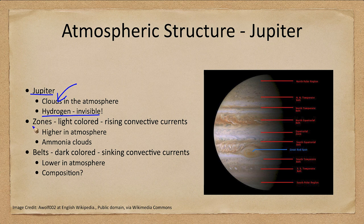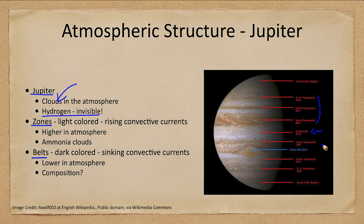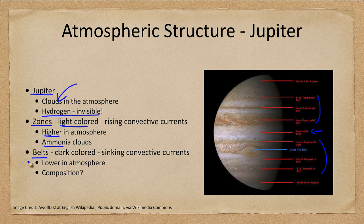There are two parts: the zones and the belts. The zones are lighter colored and are rising convective currents, higher up in the atmosphere, and often consist of ammonia clouds. The belts are dark colored, where material is sinking down; they are lower in the atmosphere, and their composition is less well known. When looking at Jupiter, it appears as if everything is at the same distance, but the zones are much higher up and the belts are further down below.